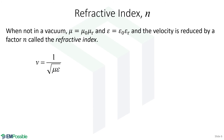Refractive index is the factor by which a wave slows down when propagating through some medium. If refractive index is two, the speed of the wave is half what it would be in vacuum. If refractive index is three, the speed is one third what it would be in vacuum. To derive refractive index: we write permeability as the free-space permeability times the relative permeability, and similarly permittivity as the free-space permittivity times the relative permittivity, also called the dielectric constant.